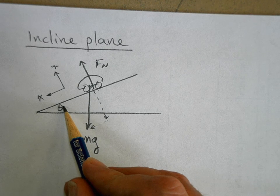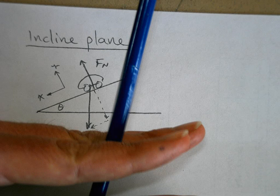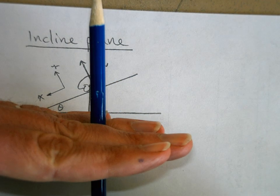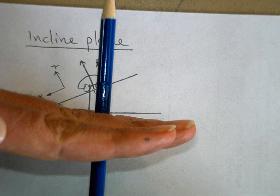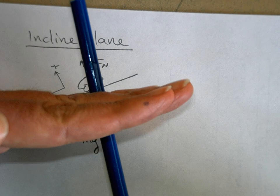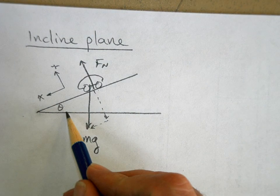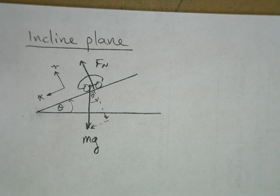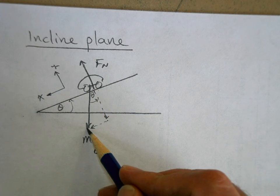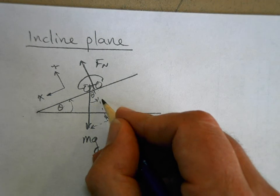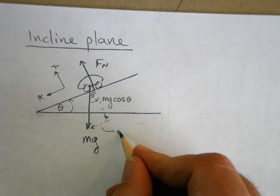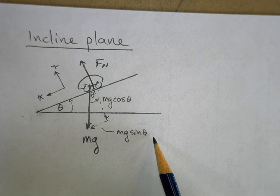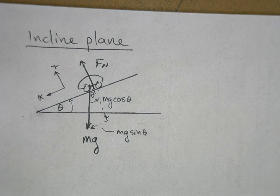If this is the angle of incline theta, the coordinate system has been rotated up. The normal direction gets rotated with the plane, and the angle it makes is also theta. So if you make a right triangle out of your weight, the adjacent leg is mg cosine theta and the other component is mg sine theta. It's this mg sine theta that is the net force causing the car to accelerate down the incline.